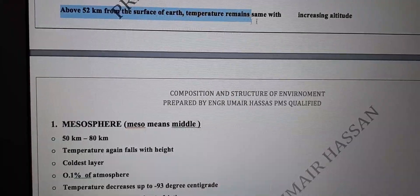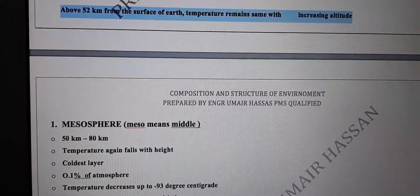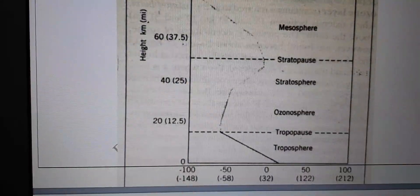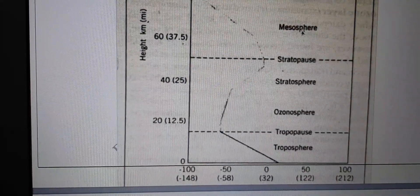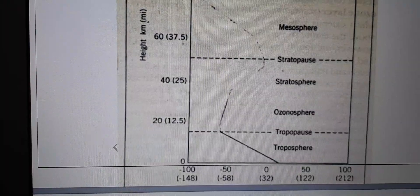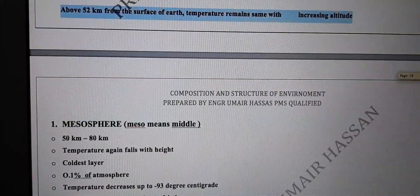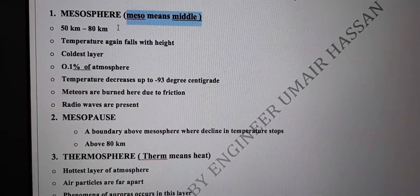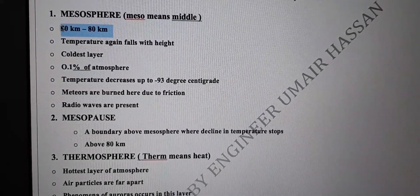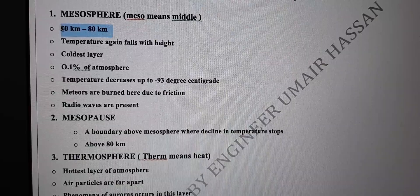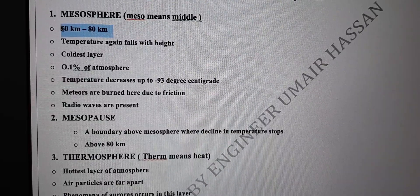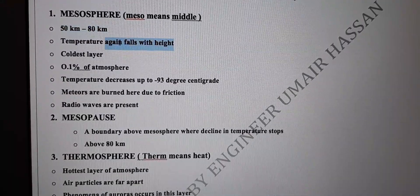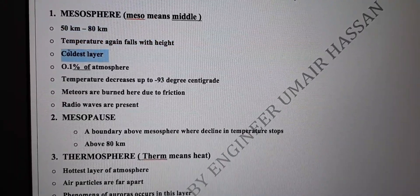The stratopause is the boundary above 52 kilometers from the surface of earth where temperature remains the same with increasing altitude. This boundary between stratosphere and mesosphere is known as the stratopause. Mesosphere — 'meso' means middle — exists from 50 to 80 kilometers from the surface of earth.